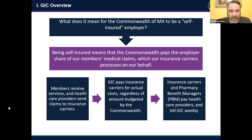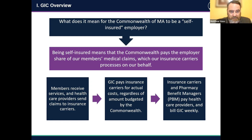As a member, you receive your healthcare services from your provider, and it is your doctor or hospital that actually sends a claim to one of our six insurance carriers. The carrier, which essentially acts as an administrator for the GIC, pays the provider for that claim and then bills the Group Insurance Commission. We then at the GIC reimburse our health insurance carriers for those claims.